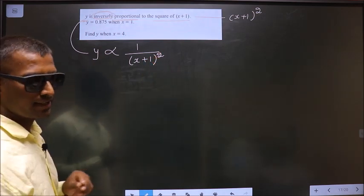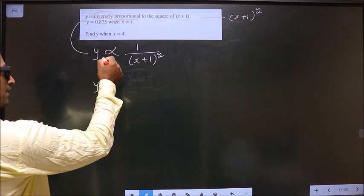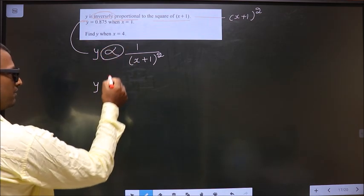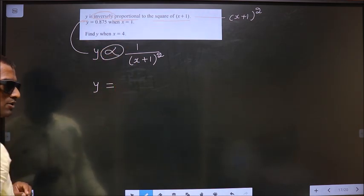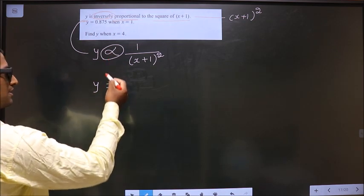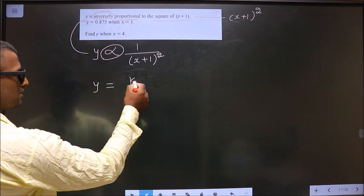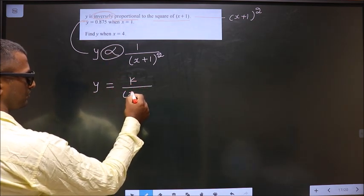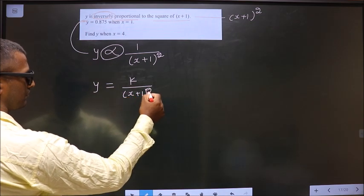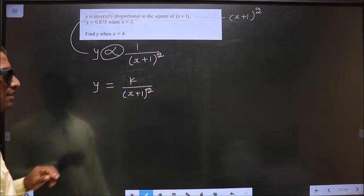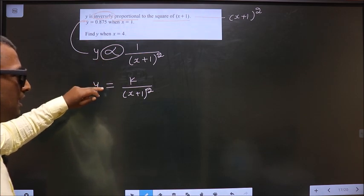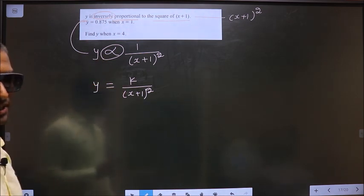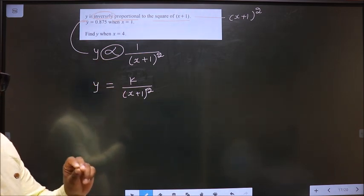Okay, now I will replace proportionality symbol with equal to. So whenever you replace proportionality symbol with equal to, you should put a constant k. Did you understand? Whenever you are replacing proportionality with equal to, you should put a constant k. It is a rule.